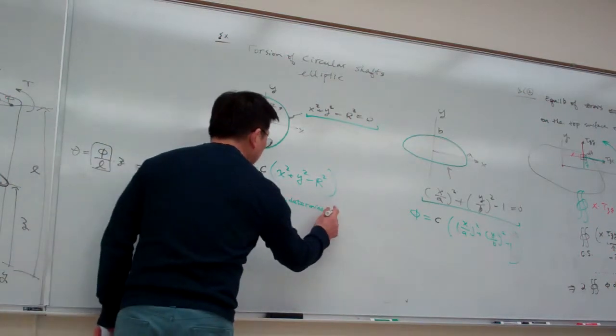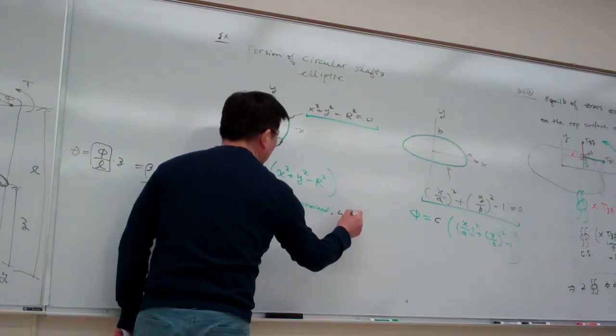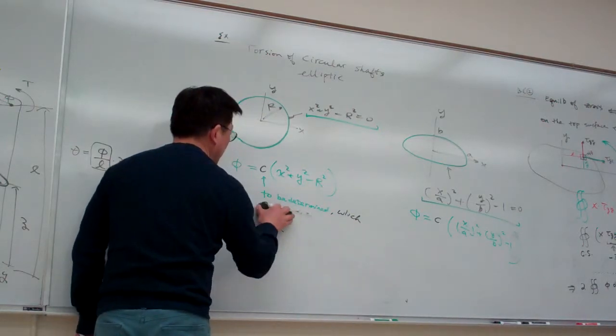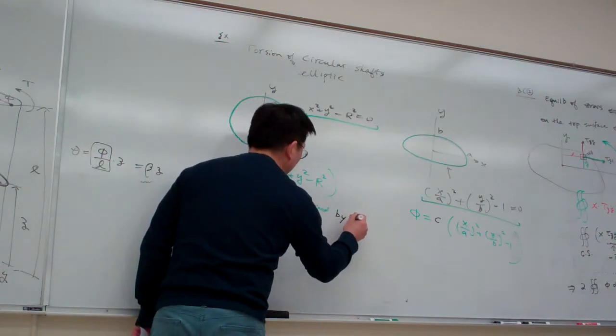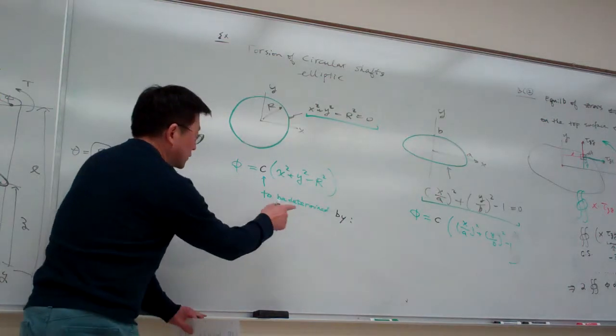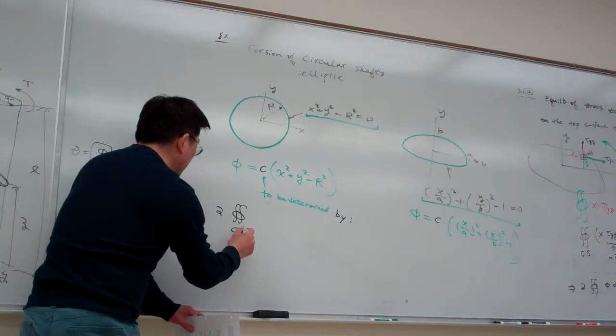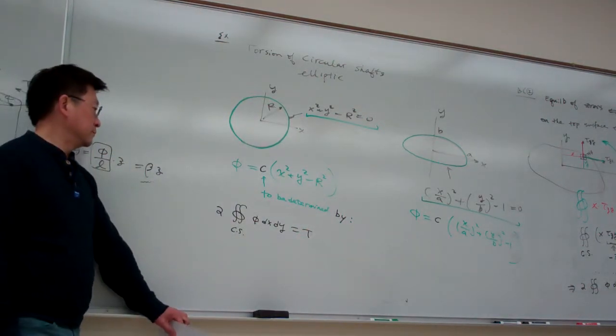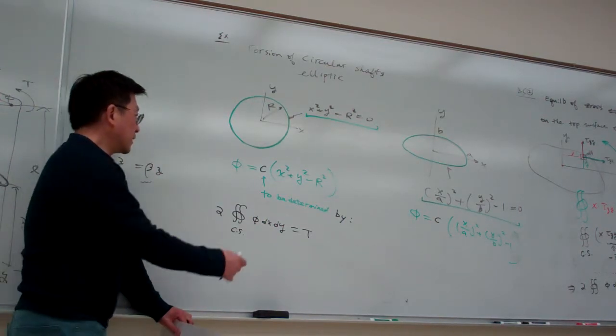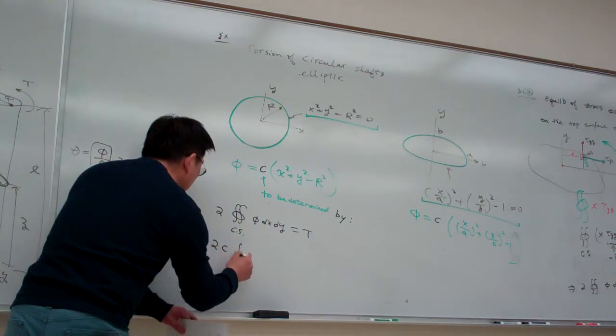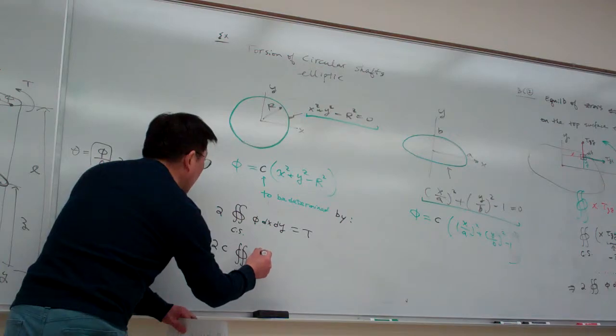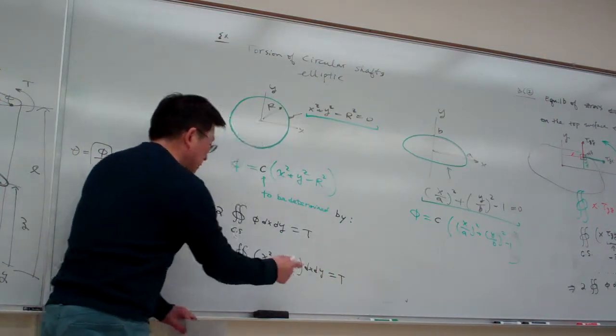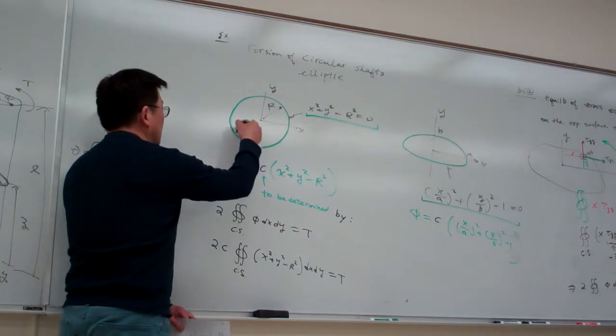So basically, this one which can be determined to be determined by this, we simply introduce phi into there, 2, and cross-sectional integral, and phi dx dy equal to t. Assuming you know how to integrate this, so simply that is c times this is cross-sectional, and then x squared plus y squared minus r squared, and dx dy. Assuming you know how to implement this one, and this is a cross-section, this cross-section basically defined by this one.